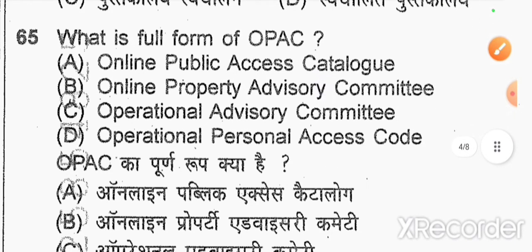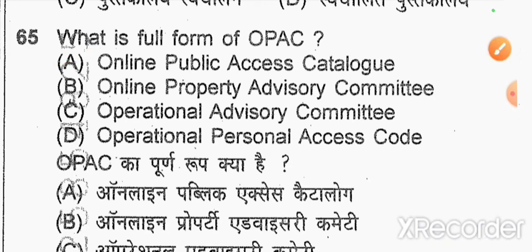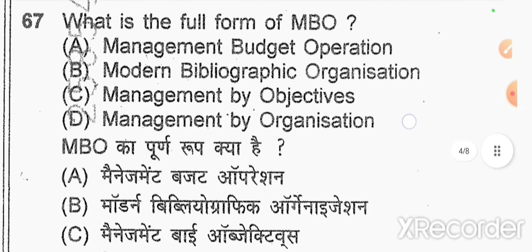Question number 65: what is the full form of OPAC? Option A — right answer: Online Public Access Catalog. Question number 66: what is the full form of MBO? Option C — management by objectives.